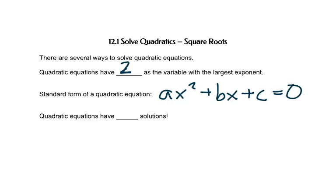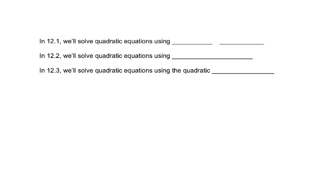In standard form, the x² term has to come first, then the x term, then the constant, and it has to equal 0. Quadratic equations have two solutions, so we'll always be looking for two solutions. In section 12.1, we'll solve quadratic equations using square roots.